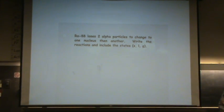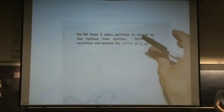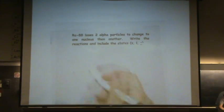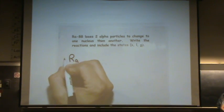Radium. So again, how about your periodic table? Radium decays twice with alpha particles. It's 88.